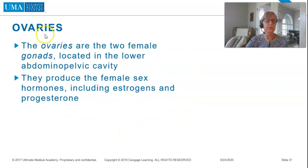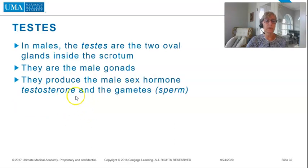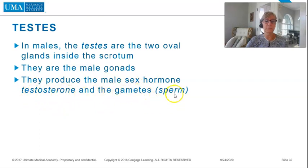The ovaries are the two female gonads located in the lower abdomen pelvic cavity. They produce the female sex hormones, including estrogens and progesterone. In males, the testes are the two oval glands inside the scrotum — they are the male gonads, producing the male sex hormone testosterone and gametes, which is sperm.